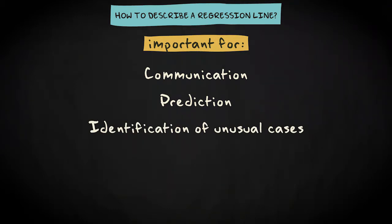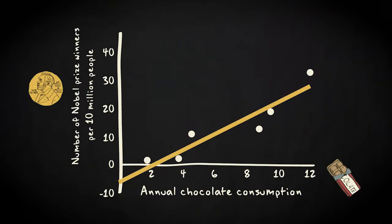Based on the regression line in this scatter plot, we would predict that a country with an annual chocolate consumption of 6 kg per year per capita would have about 11 Nobel Prize winners per 10 million people. Similarly, based on this same line, we would predict that a state with an annual chocolate consumption of 11 kg per year per capita would have about 25 prize winners per 10 million people.